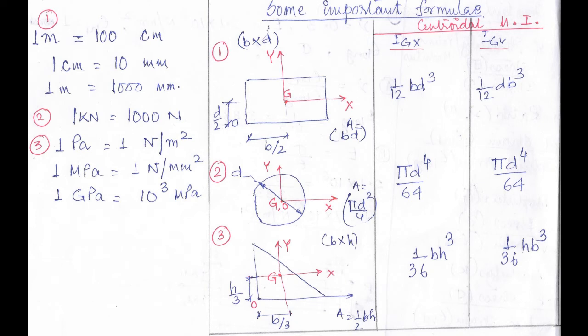Next is a circle of diameter d. The area of a circle is πd²/4. The centroidal moment of inertia of a circle about the x-axis as well as the y-axis is equal to πd⁴/64.